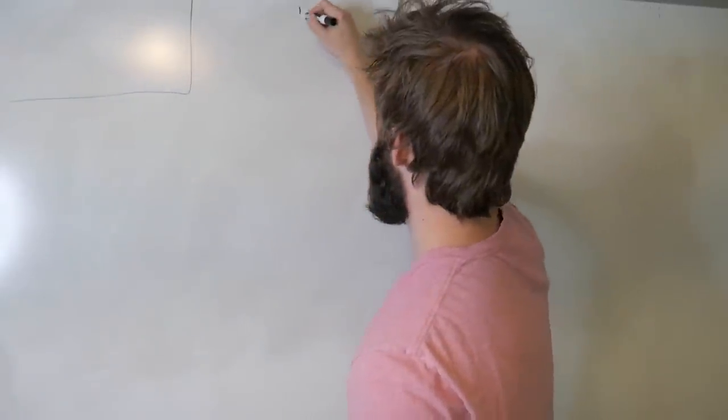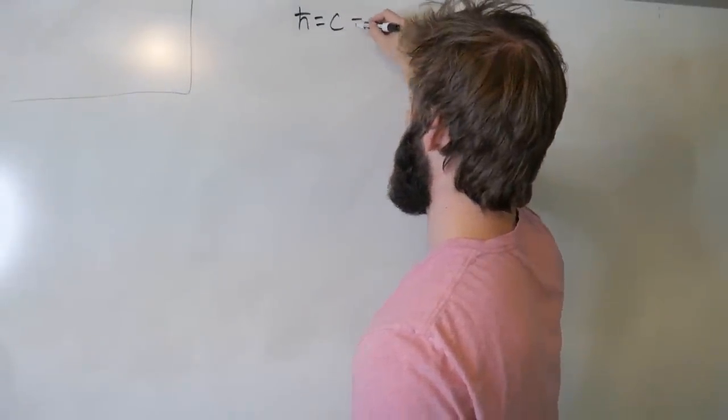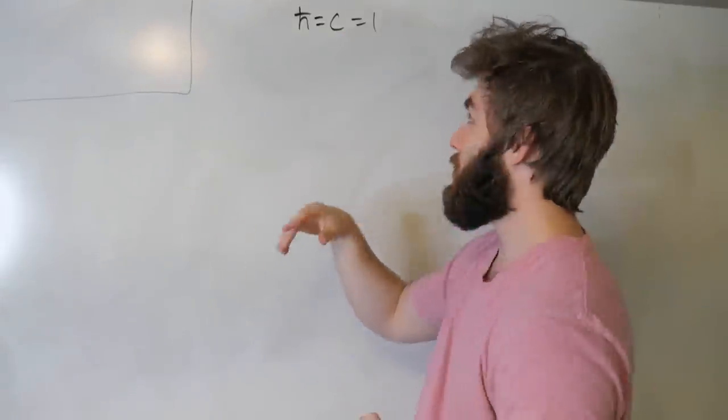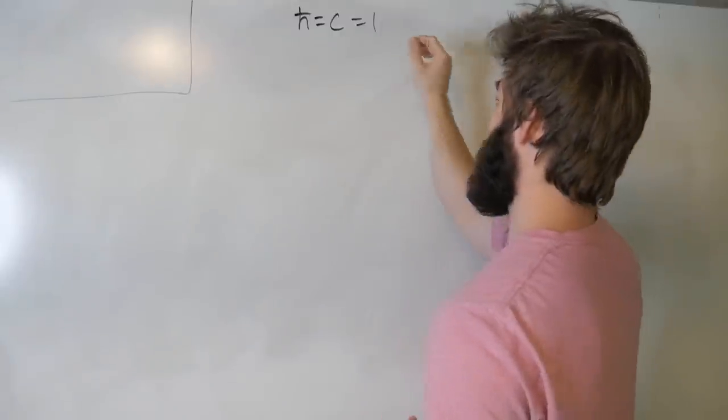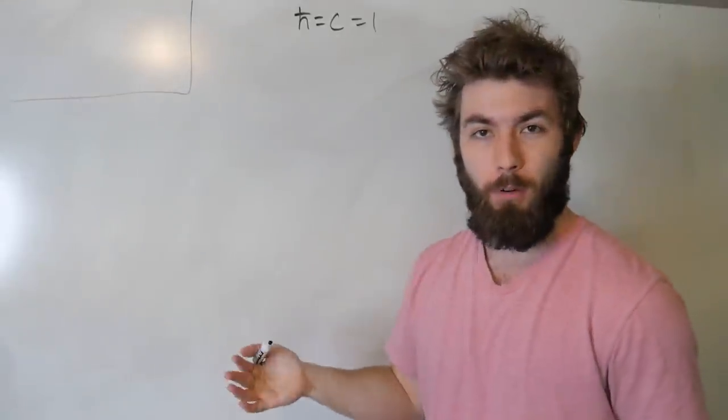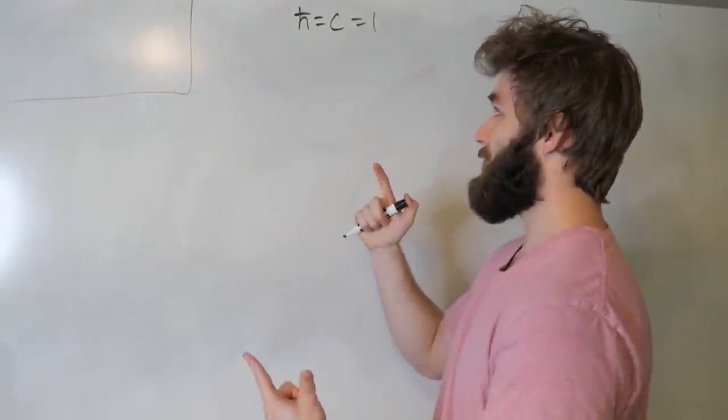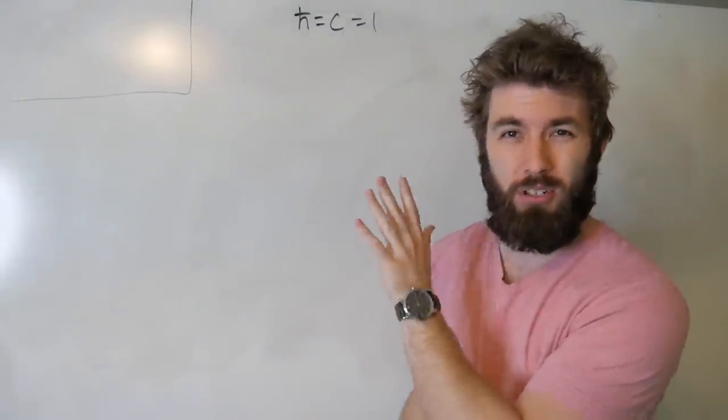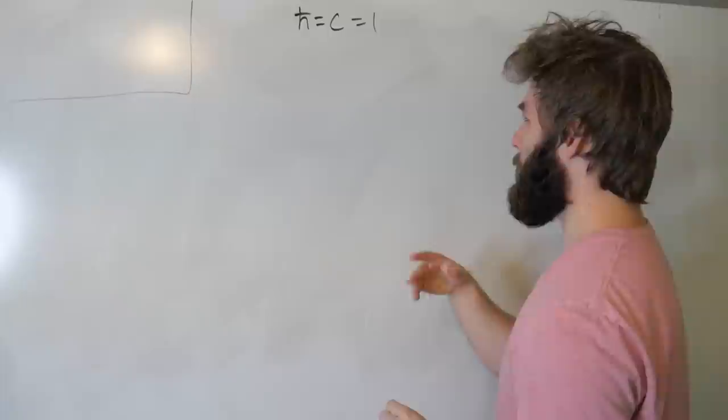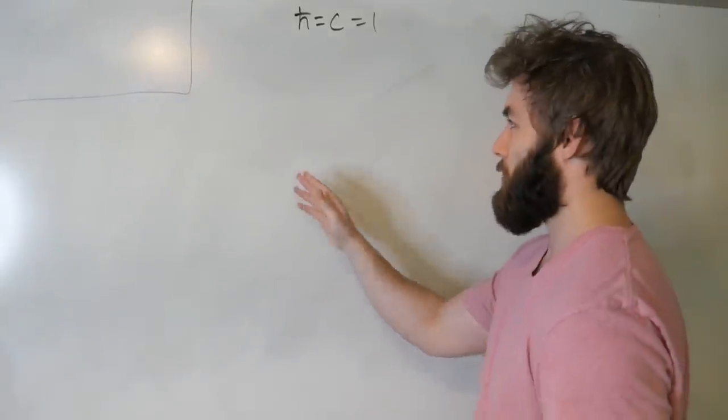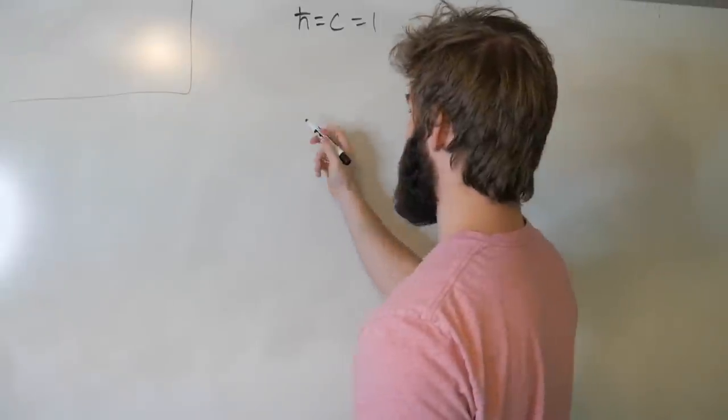Now throughout this video I'm going to be using natural units, which is where we set h-bar equal to c equal to 1. So that's just saying we're not using meters per second anymore and we're not using joule seconds anymore. We're choosing units such that these quantities are both 1. And that's just going to keep us from having to write a whole bunch of h-bars and c's.